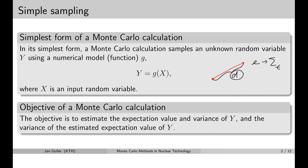In Monte Carlo simulations we are always interested in the expectation value of the result — in this case, the expectation value of the distance of fission neutrons to the first collision. When we sample the result quantity many times, we will have enough data to calculate the expectation value with very good precision.